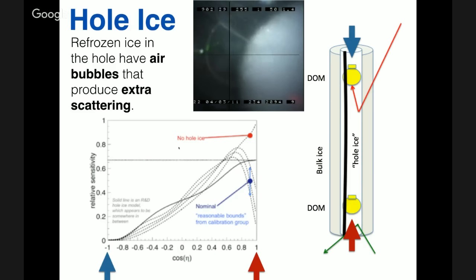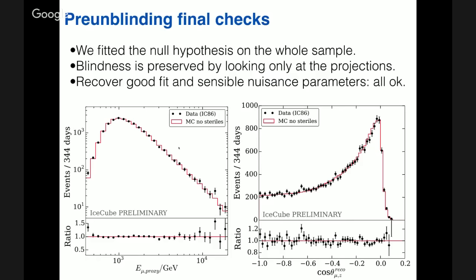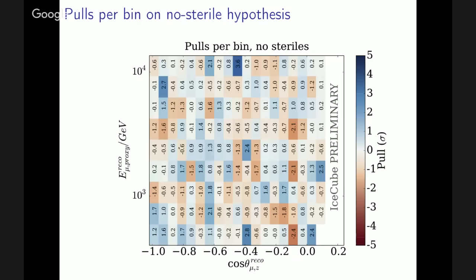This was a blind analysis. We performed blinding checks, fitted the null hypothesis in the full sample — finding reasonable chi-squared values — and looked only at projected distributions that did not expose the specific energy-angle correlation, preserving blindness. The distributions show good fits with the red line representing the no-sterile-neutrino hypothesis. The pulls per bin for the no-sterile hypothesis show about five or six ±2-sigma fluctuations in 200 bins, which is compatible with the expectation for statistical fluctuations.